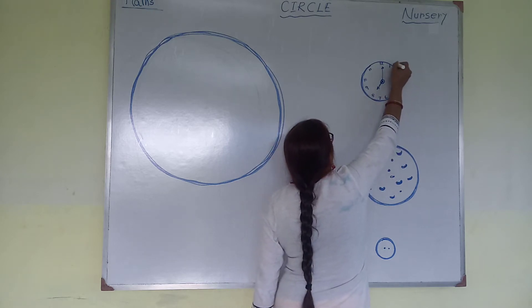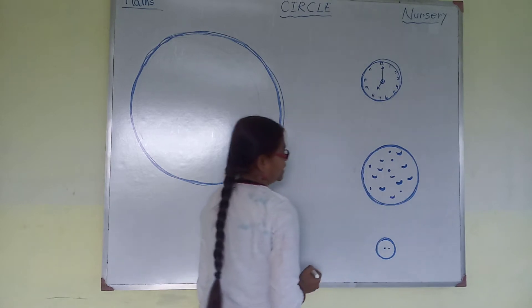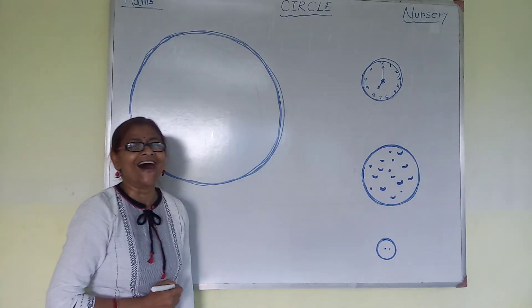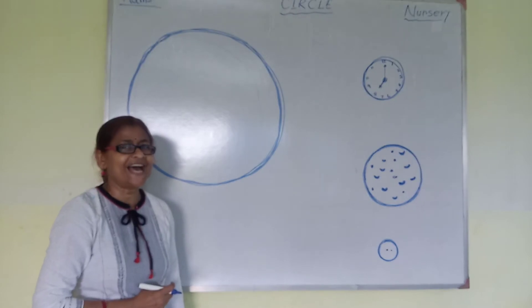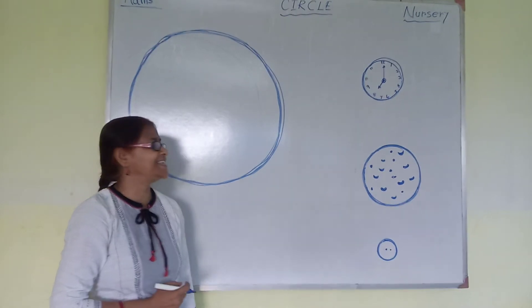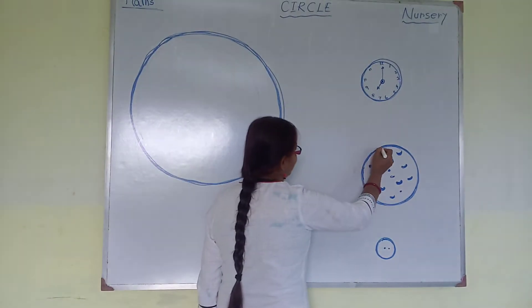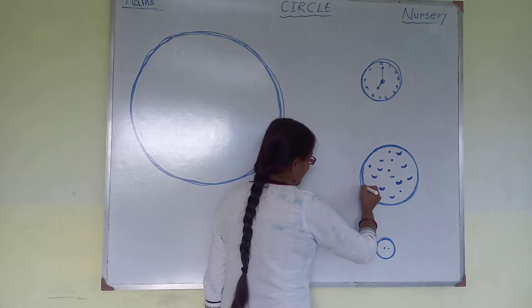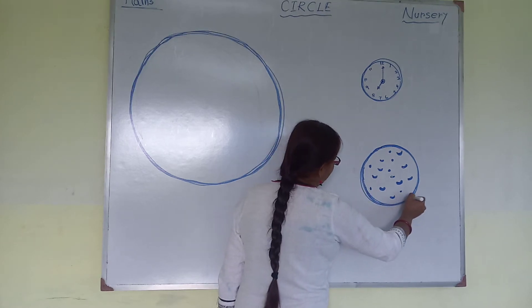Circle goes round and round. It is a picture of a pizza. Do you like pizza? Yes. The shape of a pizza is a circle.